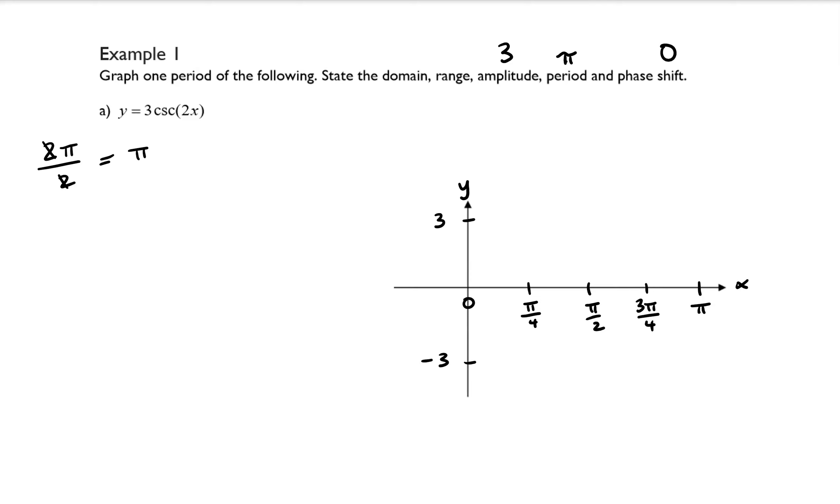So now I'm going to start plotting some points, and the guideline for this function would be to start off by building the foundation of 3 times the reciprocal function of cosecant, which is sine.